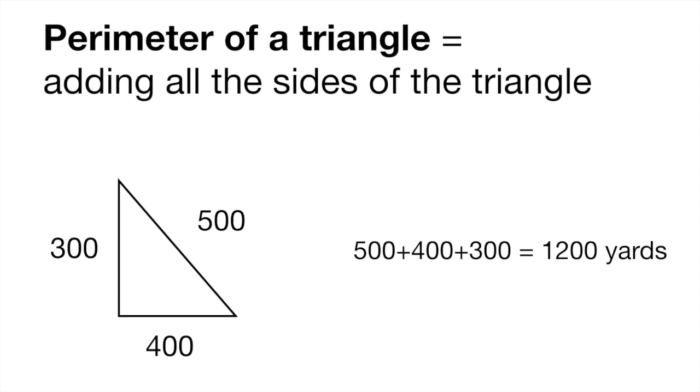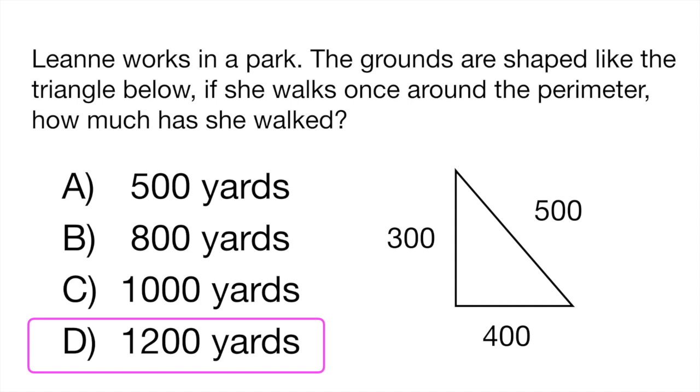Here what you have to remember is that the perimeter of a triangle, to get the perimeter of a triangle, what you have to do is to just simply add all the sides of the triangle. So you would have Leanne, and she's going to walk that way for 500 yards, and then she's going to walk left for another 400, and then she's going to walk up to her starting point another 300 yards. Okay, that's the perimeter of a triangle. And to find it, as I said, all you have to do is add all the sides of the triangle. So in this case, our answer would be 1,200 yards.